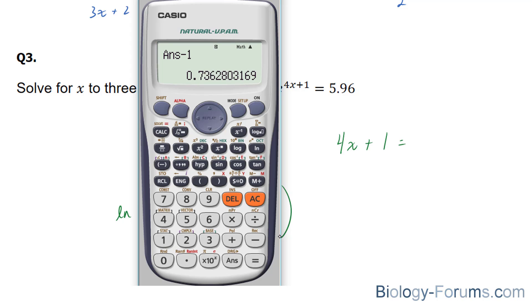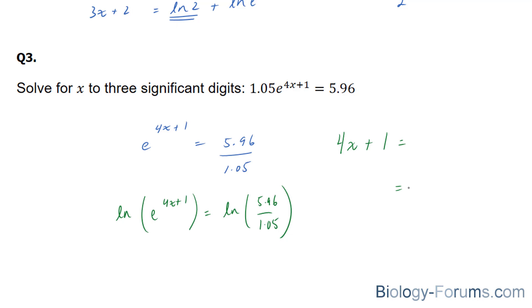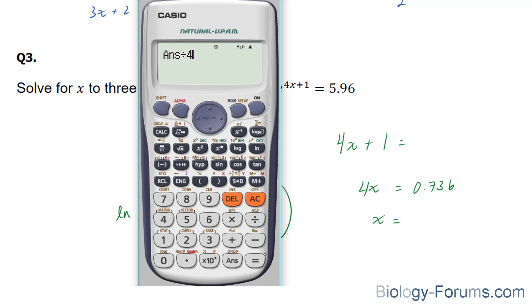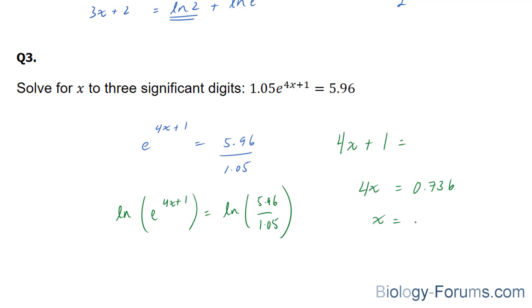And I'm going to move this over, which would make it minus 1, so we end up with 0.736. And on the left side, 4x. Therefore, our x is equal to that number divided by 4: 0.184.